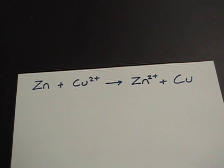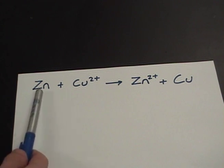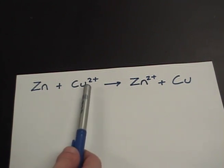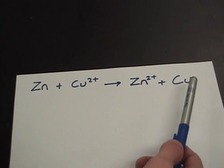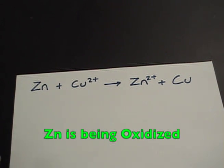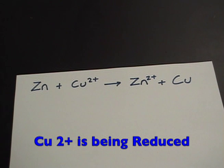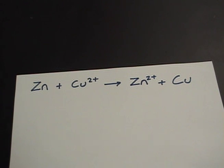Let me show you an example of oxidation and reduction in a chemical equation. In this example we have a redox reaction between zinc and copper. We see that the zinc goes from Zn to Zn²⁺, and copper goes from Cu²⁺ to plain copper. This tells us that the zinc is being oxidized because it lost two electrons, and that copper is being reduced since it is less positive than it was before, thus gaining electrons.